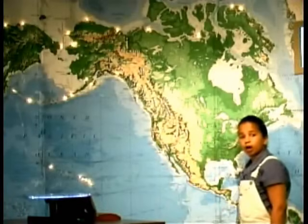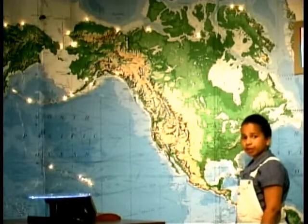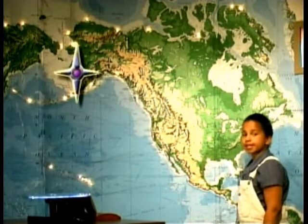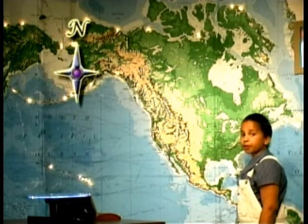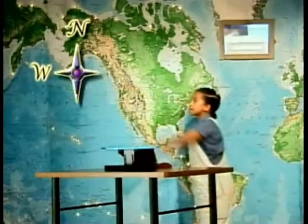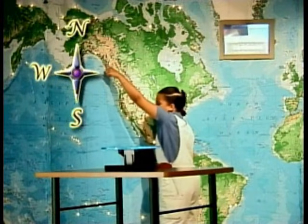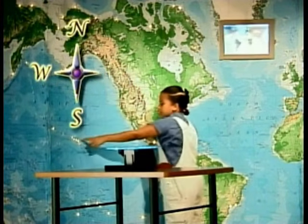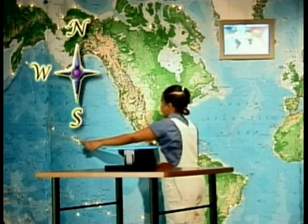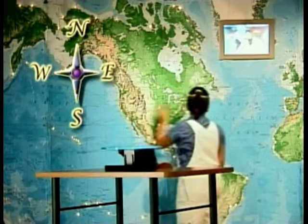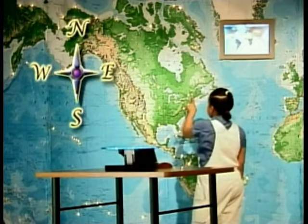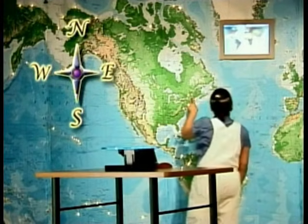Out of all the states in America, the state that is farthest north and farthest west is Alaska. The farthest south is Hawaii, and the farthest east is Maine. But if we want to know exactly where to find a place, we can use numbers on a map.